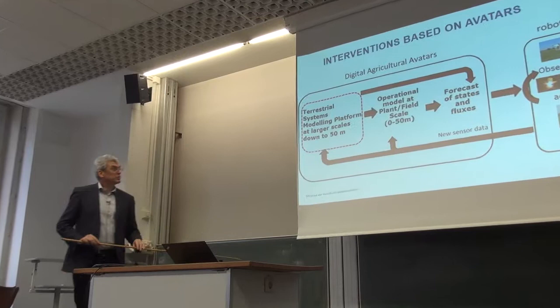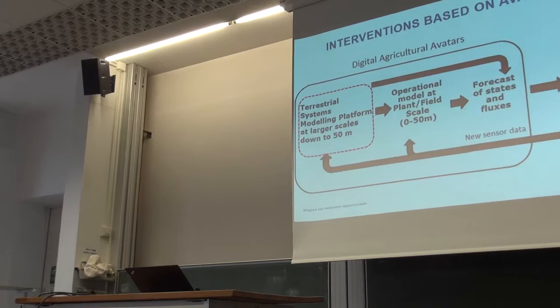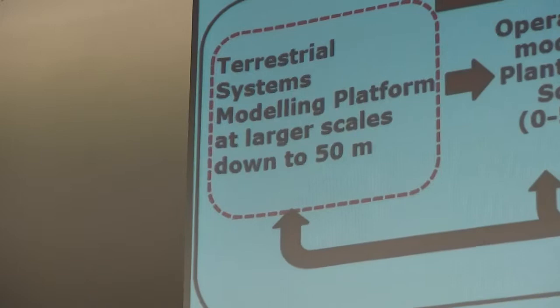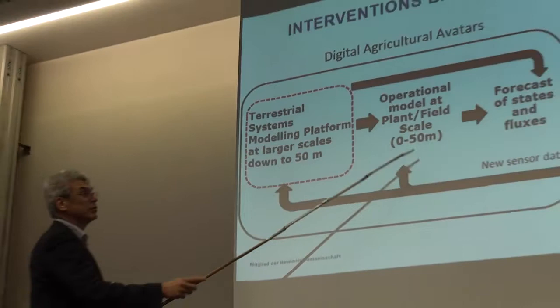This is a two-stage approach. I'm going to first talk about the TerrSysMP modeling platform, which has been developed in TR32 and is also part of the competence center of high-performance scientific computing at Forschungszentrum Jülich. Then I will discuss ways to go down to the 0 to 50 meter scale.